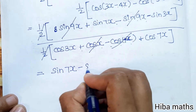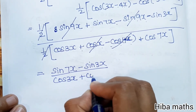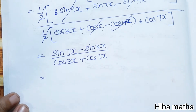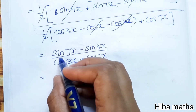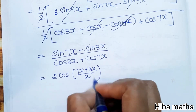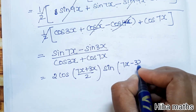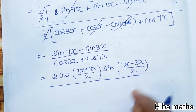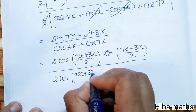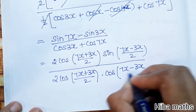After cancellations, we get sin 7x minus sin 3x, divided by cos 3x plus cos 7x. Now we apply the identity: sin C minus sin D equals 2 cos((C plus D)/2) into sin((C minus D)/2). Here C is 7x and D is 3x. For the denominator, cos C plus cos D equals 2 cos((C plus D)/2) into cos((C minus D)/2), giving 2 cos((7x plus 3x)/2) into cos((7x minus 3x)/2).